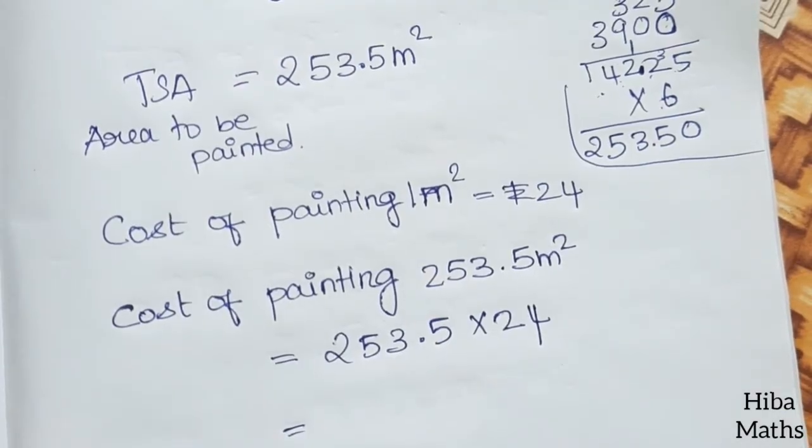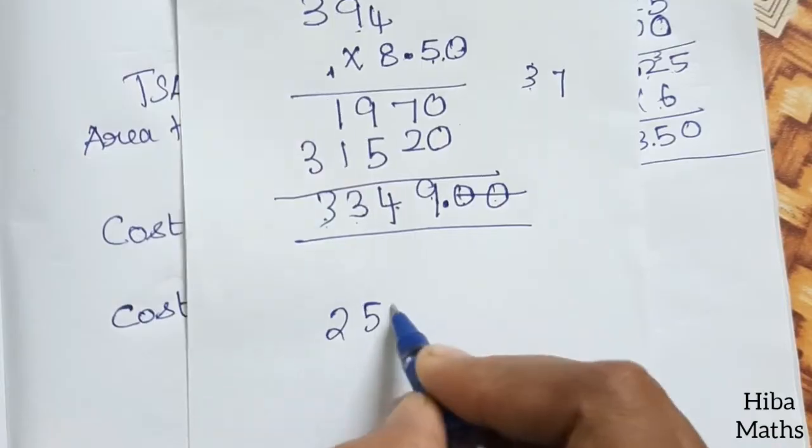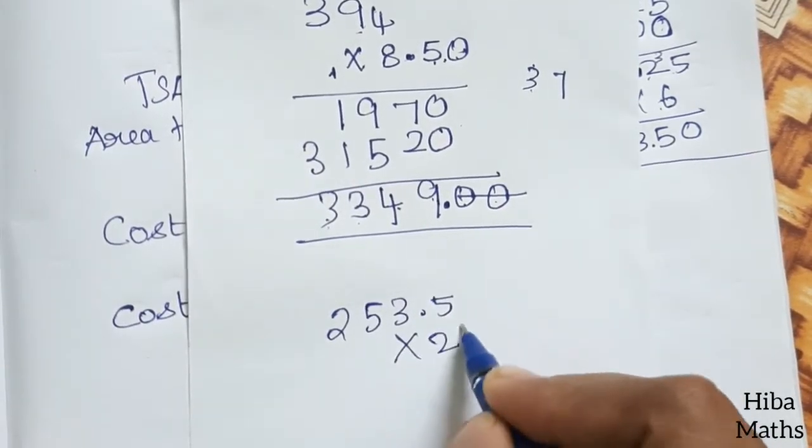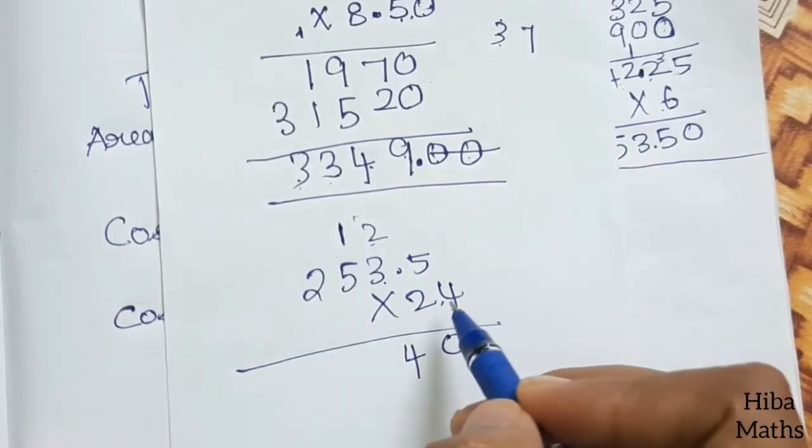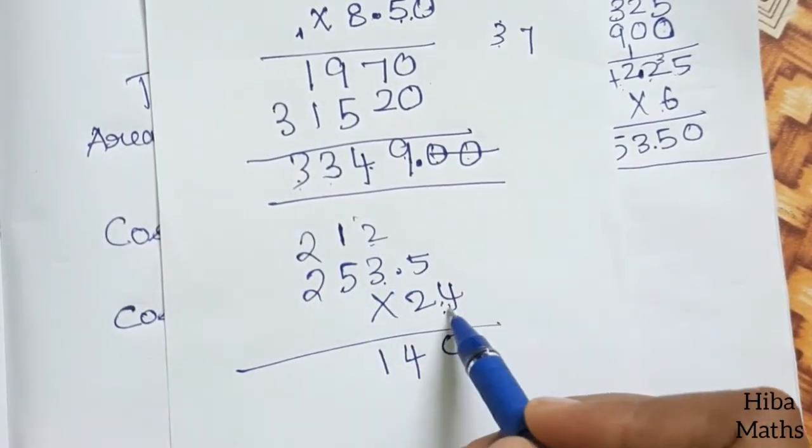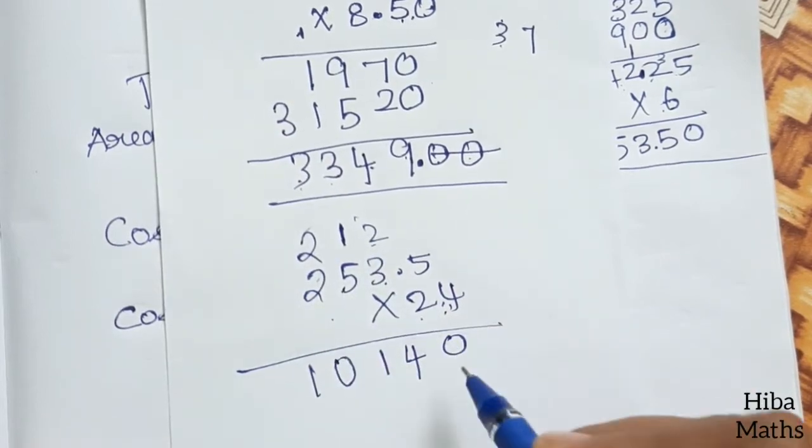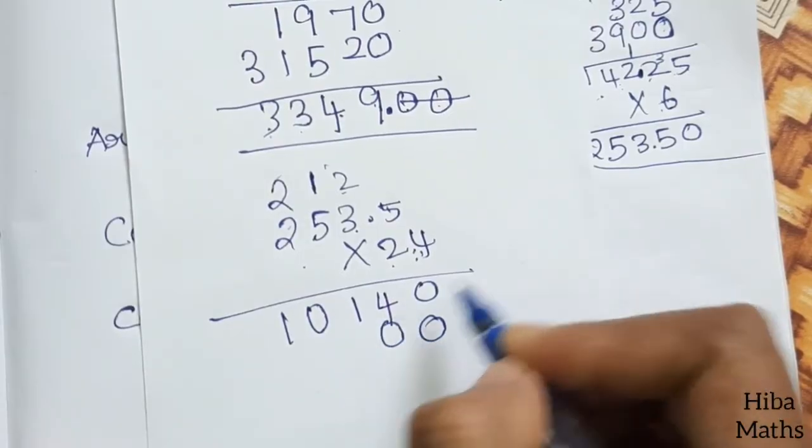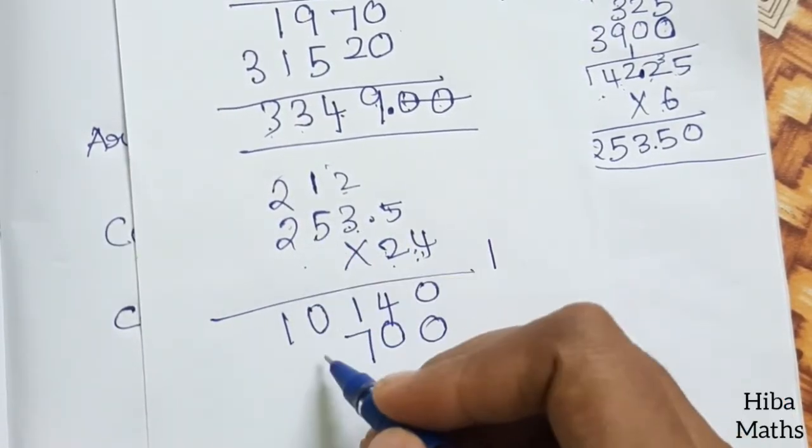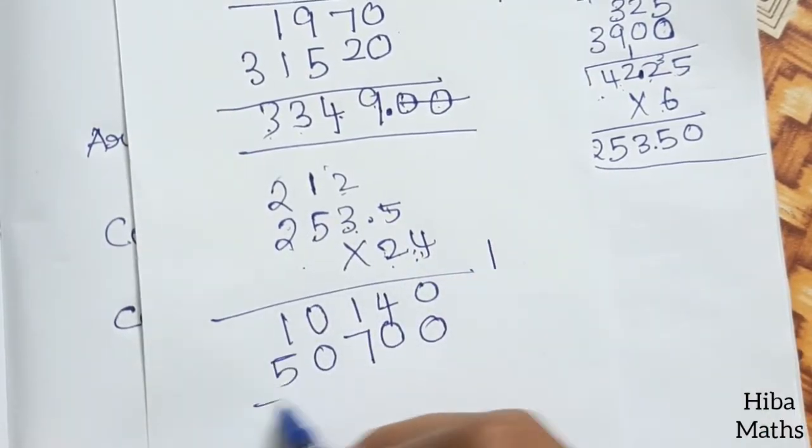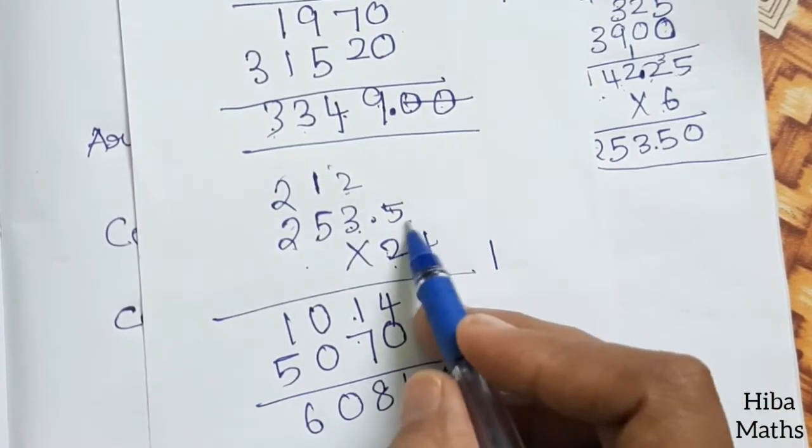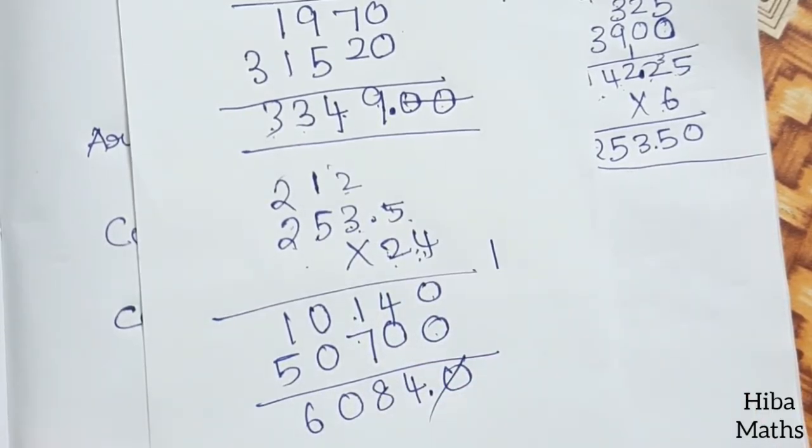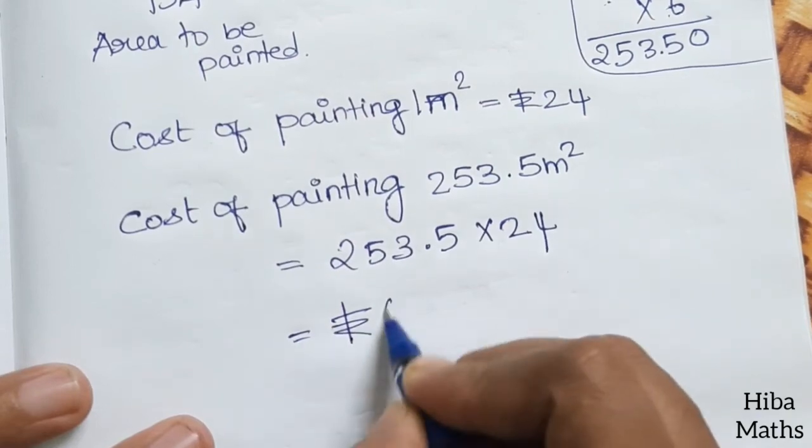Calculating 253.5 times 24: 4 times 5 is 20, balance 2. 4 times 3 is 12, plus 2 is 14. 4 times 2 is 8, plus 1 is 9. Then 2 times 5 is 10, balance 1. 2 times 3 is 6, plus 1 is 7. 2 times 2 is 4, plus 1 is 5. This equals 6084.